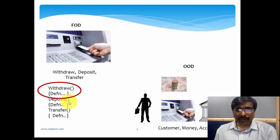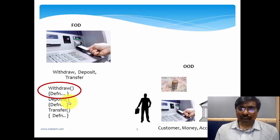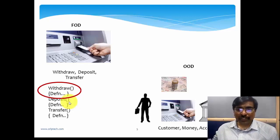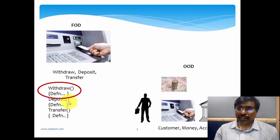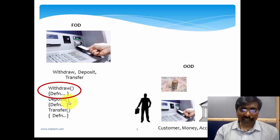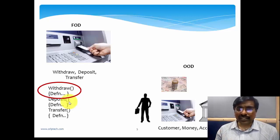If you want to withdraw cash from an ATM, the first step is to insert your ATM debit card, then enter the PIN number, then enter the amount to withdraw. So the withdraw function can be broken down into three smaller functions: one for validating your debit card, one for accepting the amount and dispensing the cash, and one for printing the transaction slip.